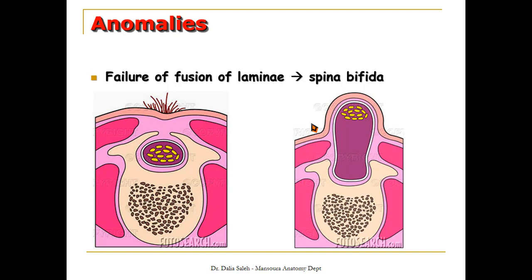Sometimes we have a manifest presentation of spina bifida, with protrusion of the meningeal sac outside the vertebral canal. If only the meningeal sac protrudes, we call it meningocele. If nerves or neural material are present inside the meningeal sac, we call it meningomyelocele, which is associated with severe neurological manifestations.